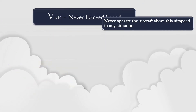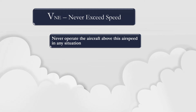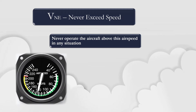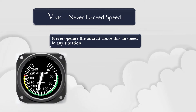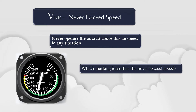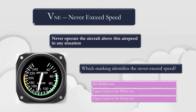The VNE speed is the never-exceed speed. An airplane should never be flown above the VNE speed in any situation. The never-exceed speed is indicated by the red line on the airspeed indicator of the aircraft.